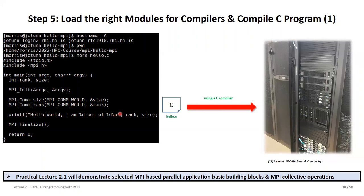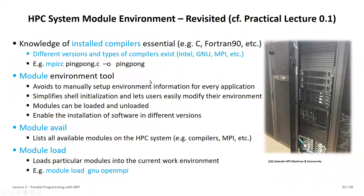While size is obviously the same for all, as it is the size of the whole communicator, the rank information is the unique identifier enabling different output from each processor. This is same program, multiple data — the rank will be different data from 0 to 3 if you have four processors. The C program needs compiling, and with the MPI.h header we need an MPI library installed, which we handle with the module environment using GNU and OpenMPI.